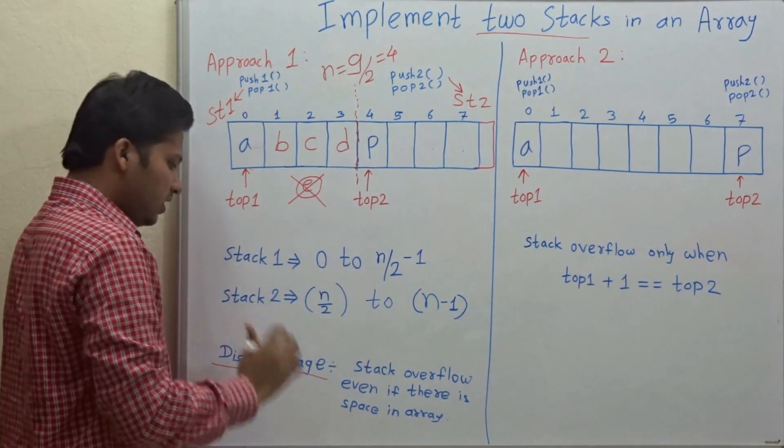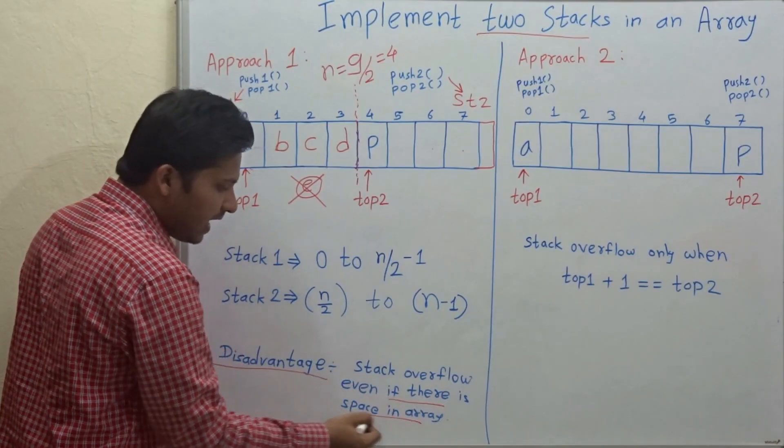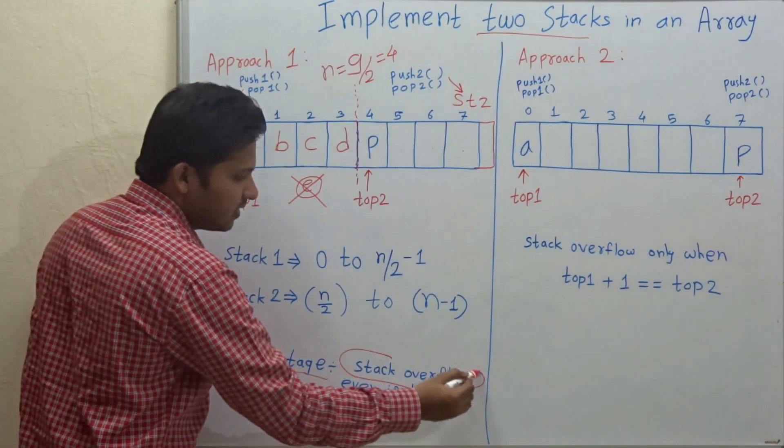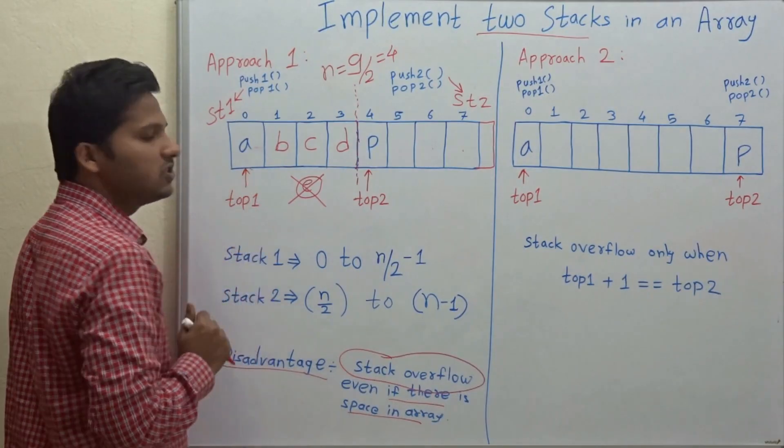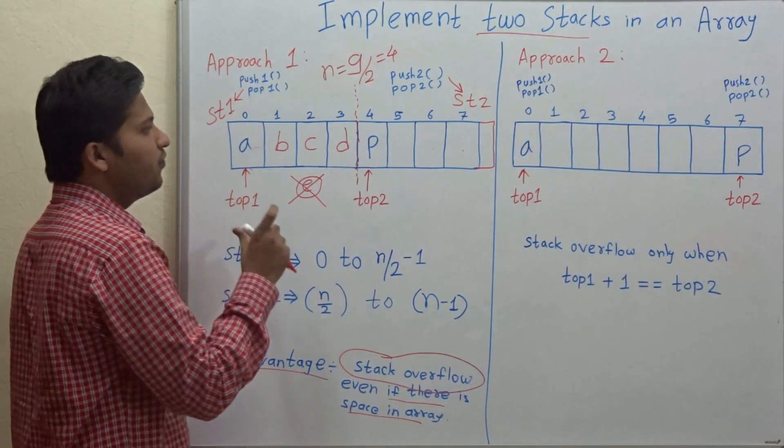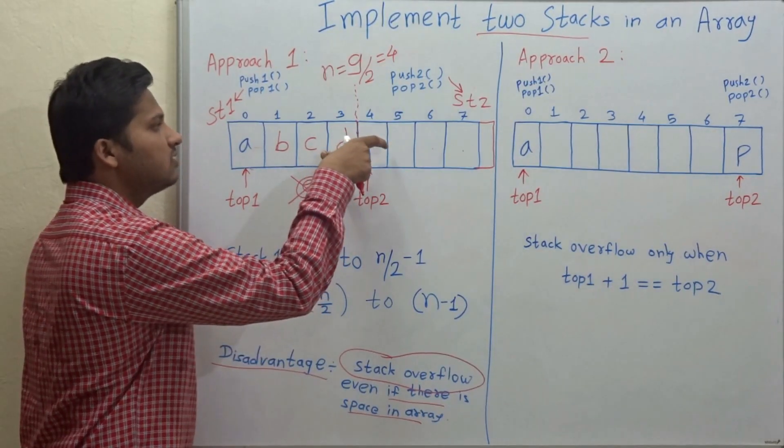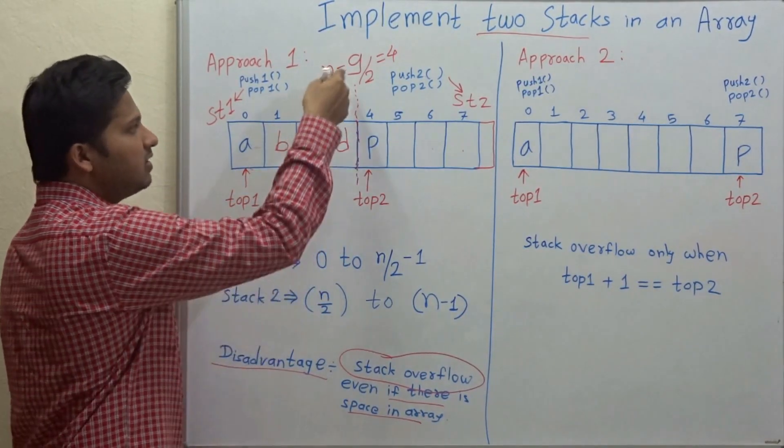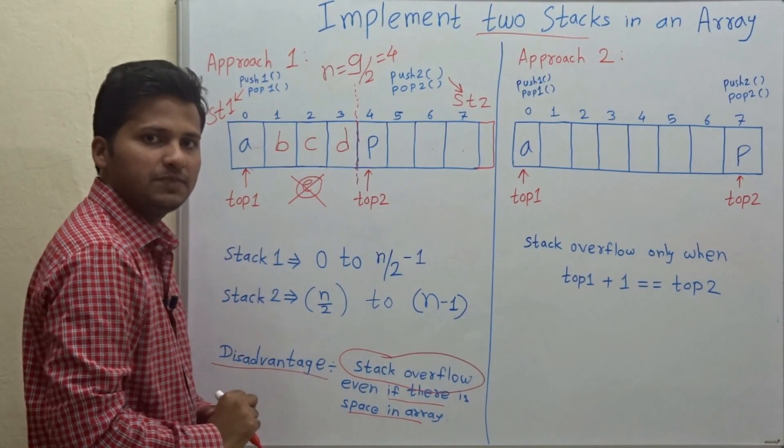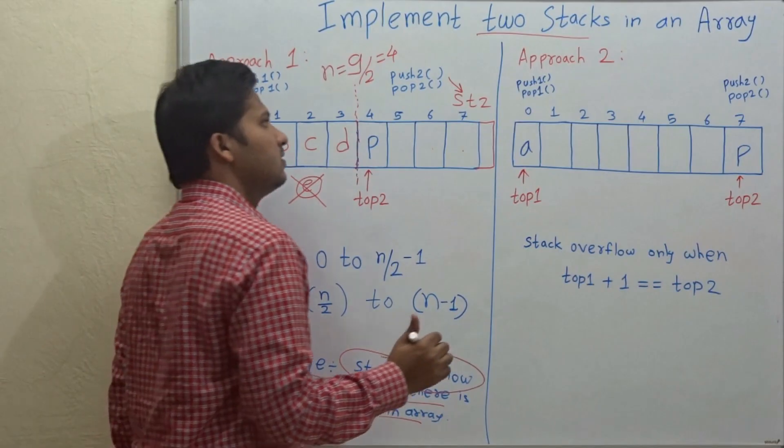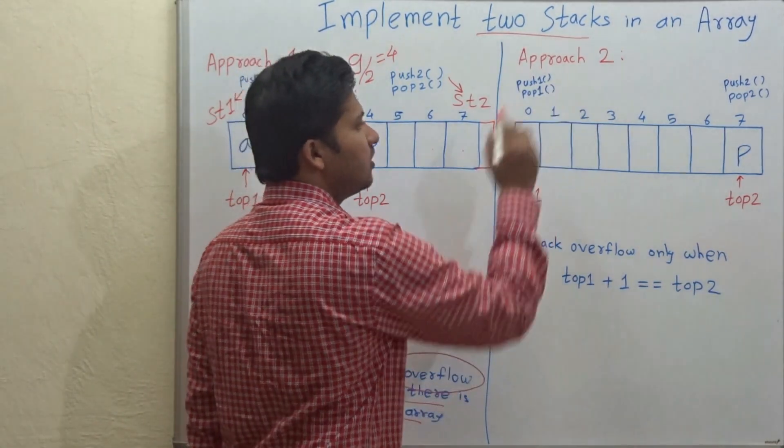So, even if there is space in the array, the stack gets overflowed. That is the disadvantage of this method. If we implement two stacks in this array by dividing the array. Now, how to overcome this disadvantage? So, that is done in approach 2.